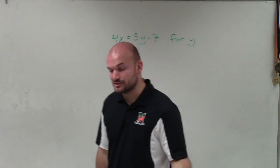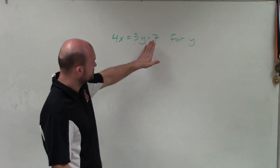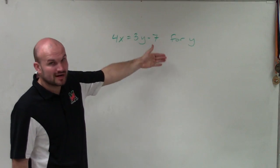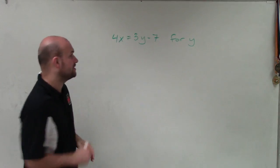So therefore, I'm going to use my inverse operations and the reverse order of operations to solve. So I look at my y and I see that my y is being multiplied by 3 and being subtracted by 7. So I want to undo those operations.